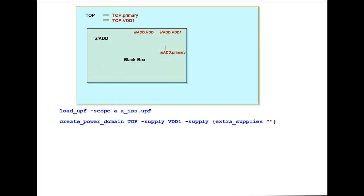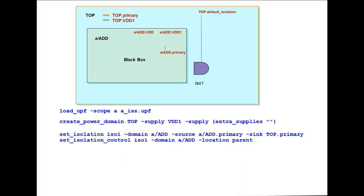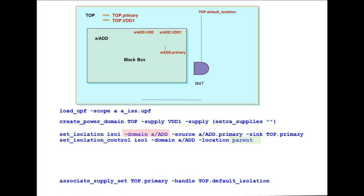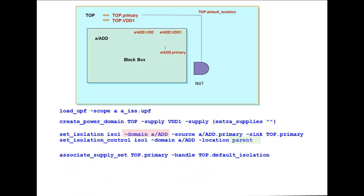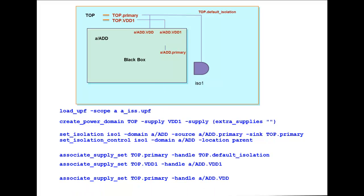In the top level UPF, we have the top level power domain definition. In this case, we also define the isolation strategy with respect to a slash ADD power domain because the location is parent, and then we have the top level to block level supply associations.